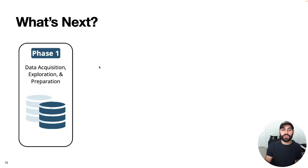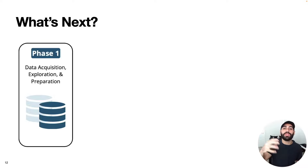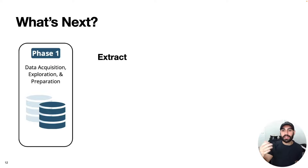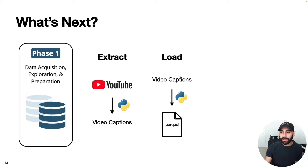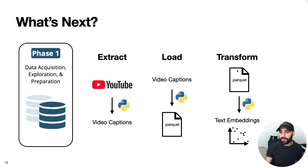The next video of this series will walk through phase one of this project. At a high level, this will consist of building a data pipeline — more specifically an extract, load, and transform pipeline. What that'll look like is extracting video captions from YouTube using Python, loading these captions into a parquet file, and then transforming these captions into text embeddings.